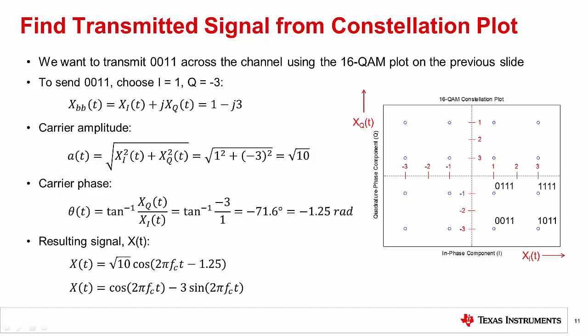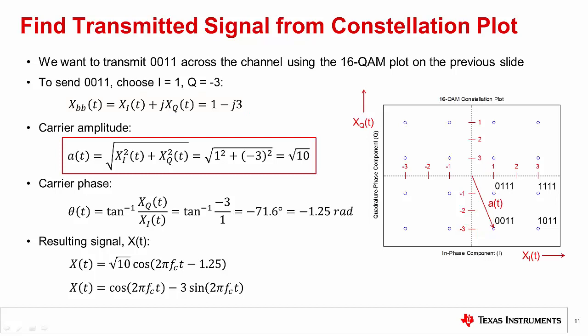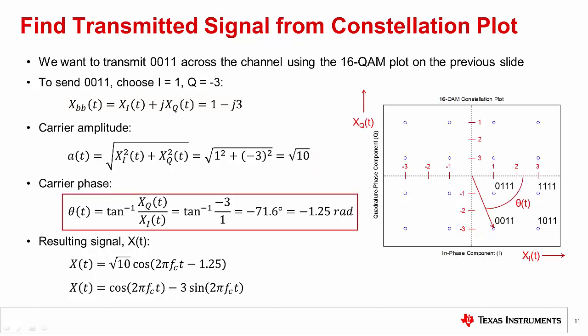The distance from the origin to a symbol represents the modulated carrier amplitude and can be calculated using Pythagorean's theorem. The phase of the modulated carrier is the angle from the positive I-axis to the symbol and can be calculated using the arctangent of Q over I. Now let's try to connect the dots between what is shown in the constellation plot and the transmitted signal definition. Consider the 16QAM constellation plot shown previously. Let's say that we want to transmit across the channel at a carrier frequency f_c and we want to send the bits 0011. Bits 0011 are assigned to the bottom left symbol in the bottom right quadrant of the complex plane, corresponding to I and Q values of 1 and negative 3 respectively. So our baseband modulation function is simply 1 − j3. We find that the amplitude is the square root of 10 and the phase is negative 1.25 radians.